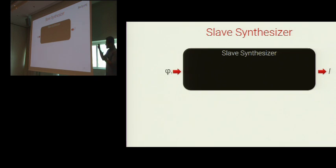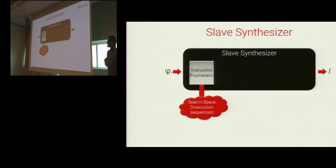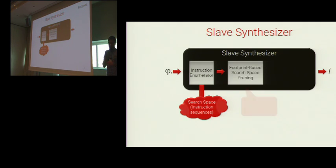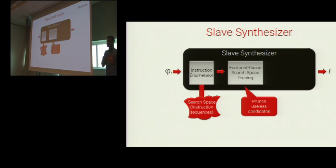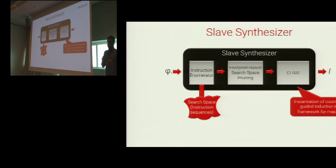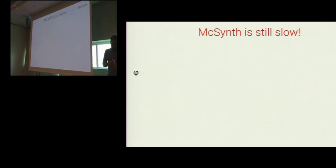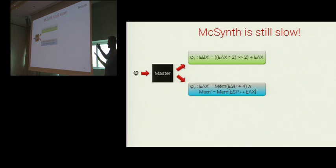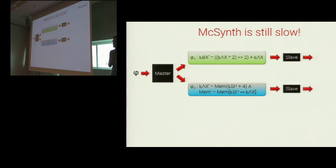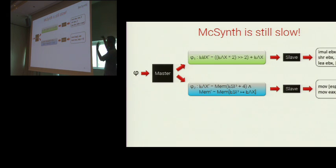A slave synthesizes an instruction sequence for a given sub-formula. At a high level, the slave enumerates candidate instruction sequences and uses the abstract semantic footprint of the sub-formula to prune away useless candidates. With the remaining candidates, it uses an instantiation of the counter-example guided inductive synthesis (CEGIS) framework to find an implementation. The details of the footprint-based pruner and the CEGIS loop can be found in our PLDI '15 paper. For our running example, the master splits phi into phi 1 and phi 2, gives those sub-formulas to slaves, and the slaves synthesize the instruction sequences.